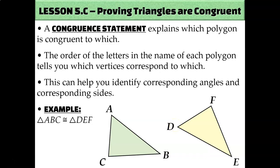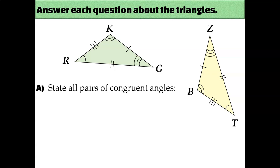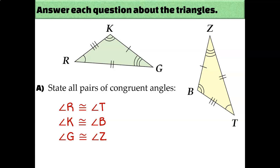Let's take a look at an example where everything on the diagrams has been labeled for us, so we can identify which pairs of angles are congruent, which pairs of sides are congruent, and use that information to write a congruence statement. Looking at this diagram, I see two angles that have one arc — that would be angle R and angle T. Since they have matching congruence marks, that means they're congruent. Likewise, angle K is congruent to angle B because they both have two congruence marks, and angle G is congruent to angle Z because they both have three congruence marks.